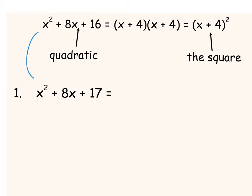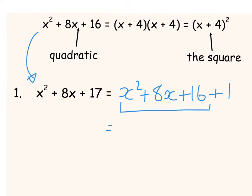If you look at the next trinomial compared to the first example, it looks very similar but the only difference is there's a plus 17 on the end. I know that is the same as X² + 8X + 16 plus an extra 1. We write that as (X + 4)² + 1. So that's the square completed on that one.